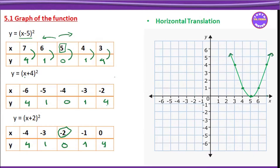Now y is equal to x minus 5, the whole square. This gives us the parabola area of y equals x minus 5, the whole square.